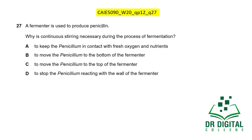In this question, a fermenter is used to produce penicillin. Why is continuous stirring necessary during fermentation? Option A: to keep the penicillin in contact with fresh oxygen and nutrients — yes, during fermentation the penicillin organisms clump together, so stirring ensures oxygen is equally distributed and nutrients are available to all organisms. Option B: to move penicillin to the bottom — no, stirring is for mixing. Option C: to move penicillin to the top — opposite of B and also wrong. Option D: to stop penicillin reacting with the fermenter wall — inert walls would address that, not stirring. The answer is A.